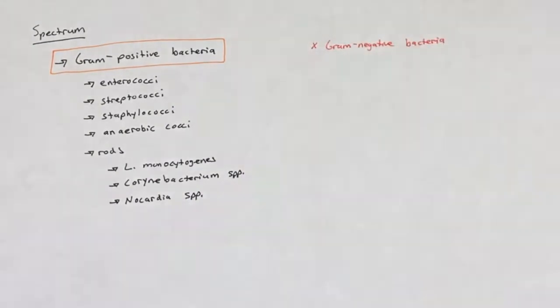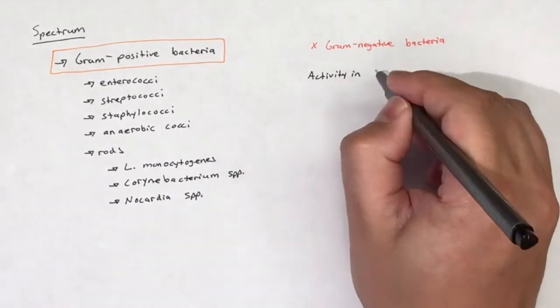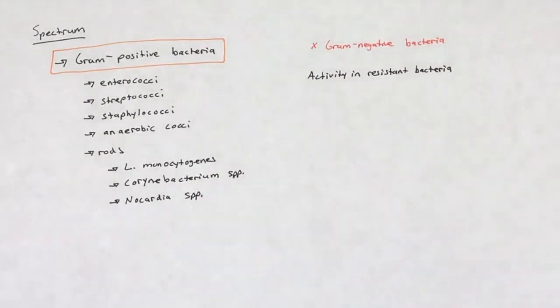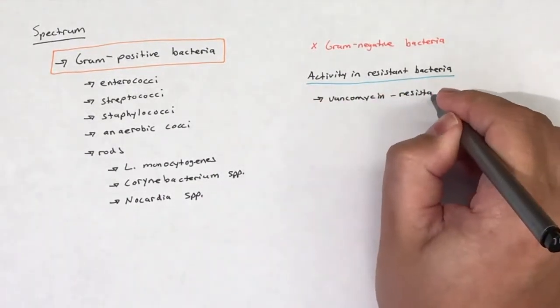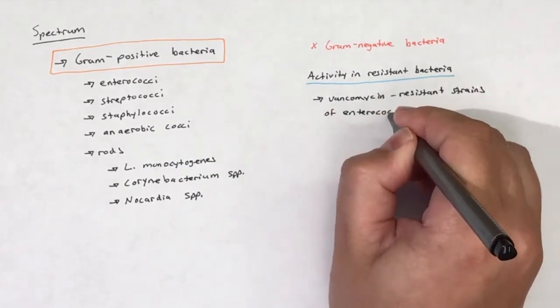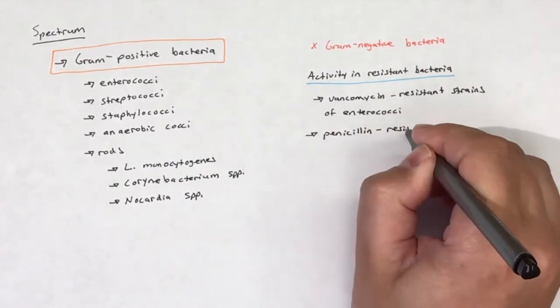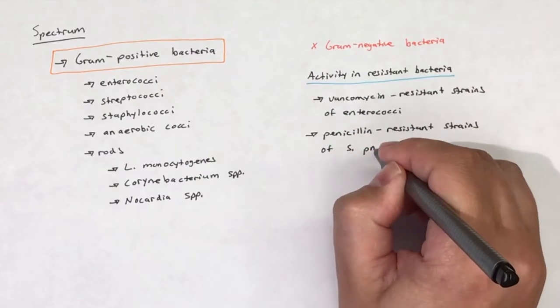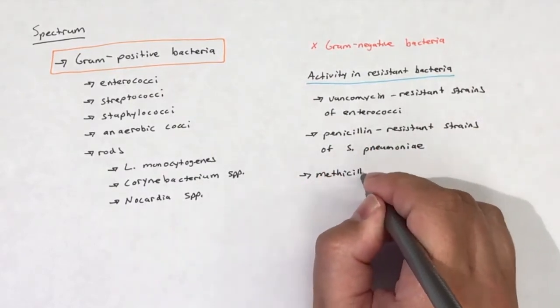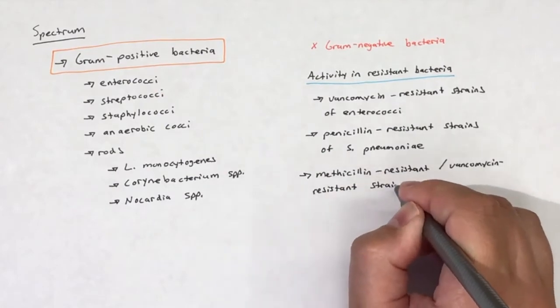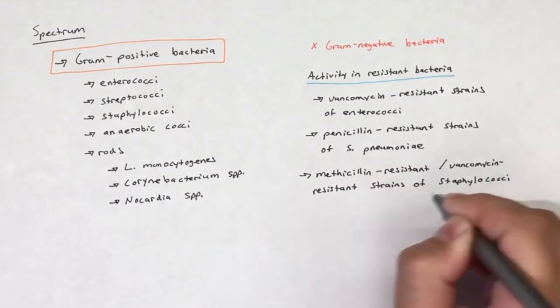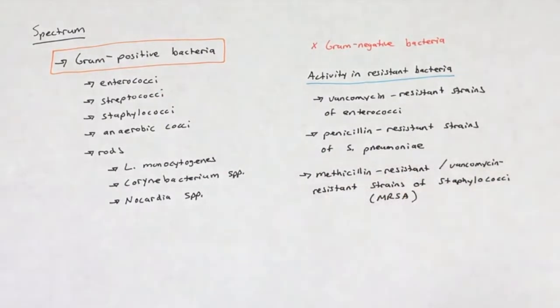Oxazolidinones have poor coverage of gram-negative bacteria. The unique mechanism of action of the oxazolidinones gives them activity in bacteria that have acquired resistance to other antibiotics, including vancomycin-resistant strains of enterococci, penicillin-resistant strains of S. pneumoniae, and methicillin-resistant slash vancomycin-resistant strains of staphylococci, for example, MRSA.